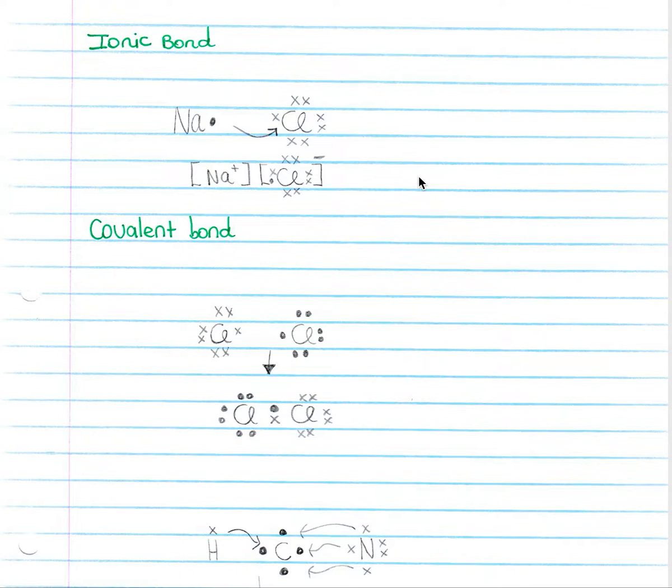Now let's look at diagrams that represent each of the bonds. You may be asked to draw a Lewis diagram indicating an ionic or covalent bond in an exam or test. If we had sodium (Na), which has one valence electron, and chlorine, which has seven valence electrons, they will bond ionically as shown over here.